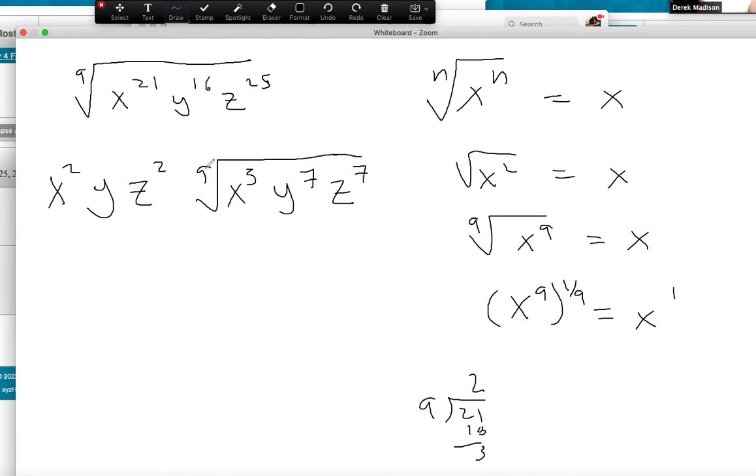So that is how you simplify anything with an index, any of these radicals. If this had been a four, we would have done the exact same thing. Four would have gone in five times. Five came out, one stays in.